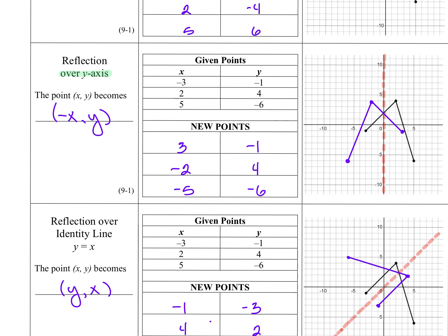When I graphed this, I plotted my first point over 3 down 1. Then I plotted my next point, negative 2, 4, and immediately connected. Then I plotted the last point and connected again. When I'm all done, you can see I've drawn in this line that we're reflecting over, and now each of my points appears very nicely as a reflection.